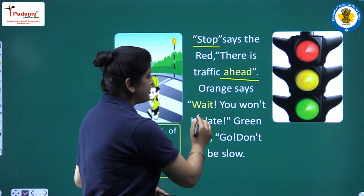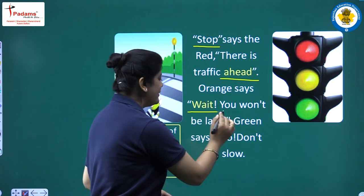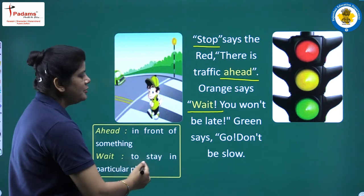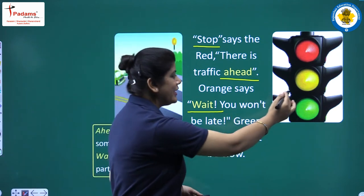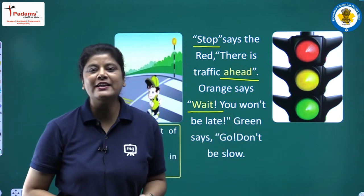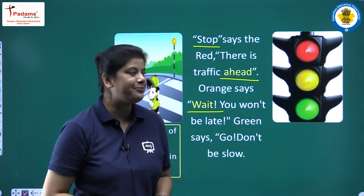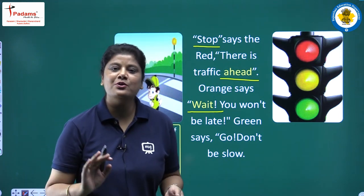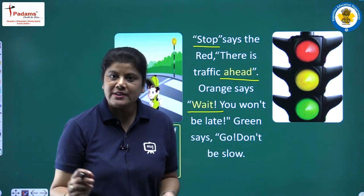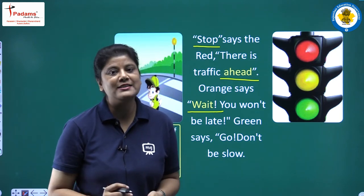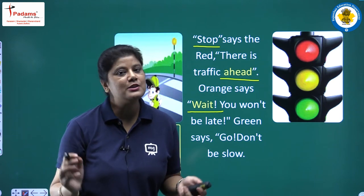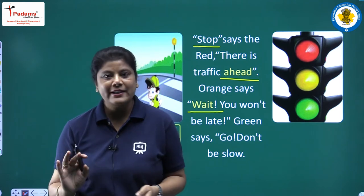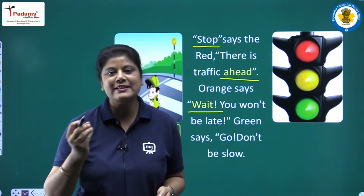Orange says, wait — you won't be late. Wait means to stay in a particular place. Orange light क्या बताती है? Wait करने के लिए कहती है। अगर आप बहुत fast आ रहे हैं तो अपना vehicle slow कर लीजे। आपको थोड़ा सा wait करना है — आप late नहीं होंगे। आप घर से थोड़ा जल्दी निकलिए।